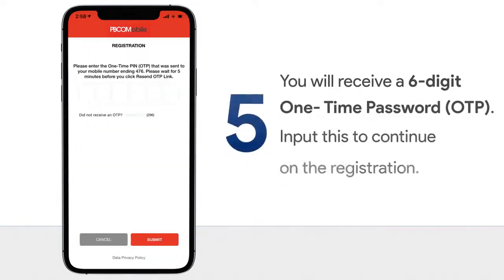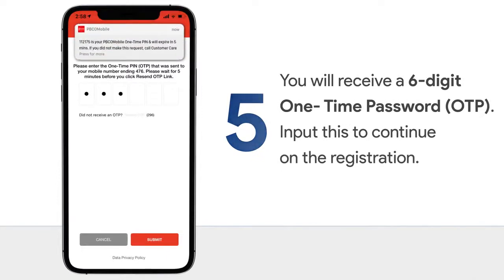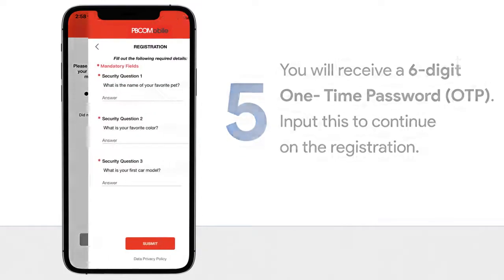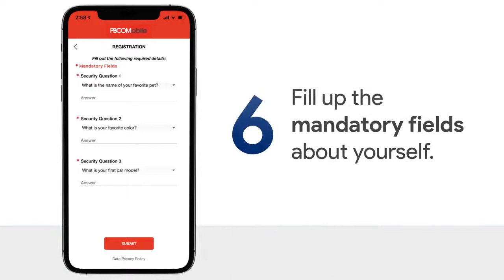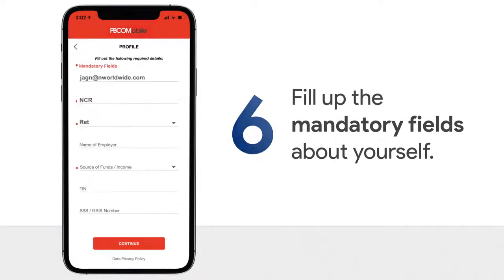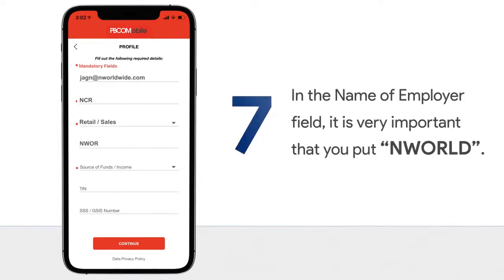Step 5: In your registered mobile number, you will receive a six-digit one-time password — OTP. Input this to continue on the registration. Step 6: Fill up the mandatory fields about yourself. Step 7: In the Name of Employer field, it is very important that you put NWorld.